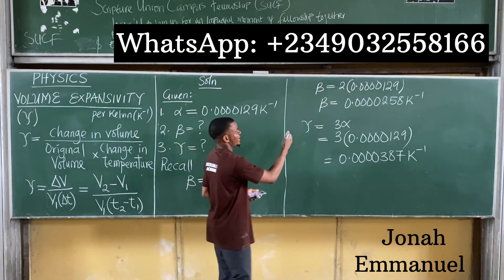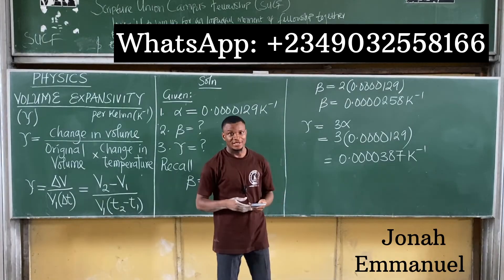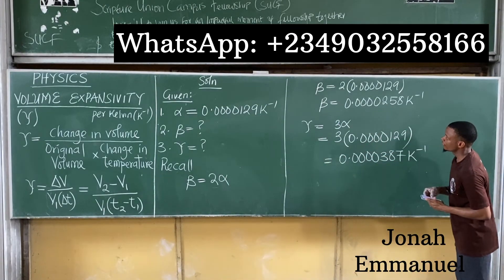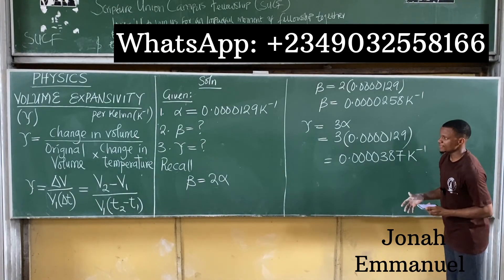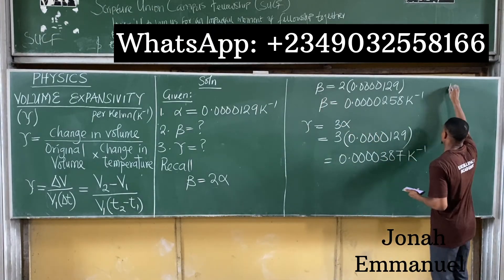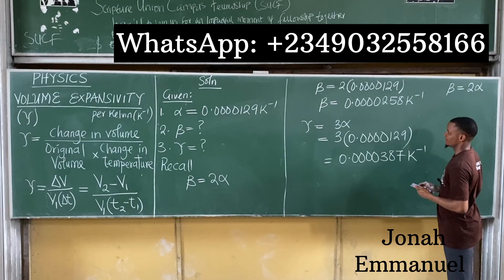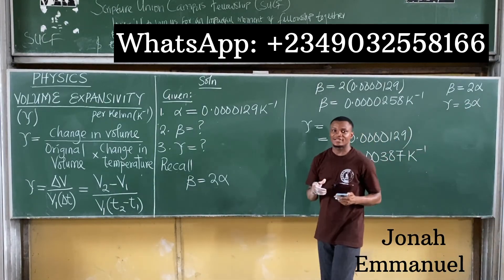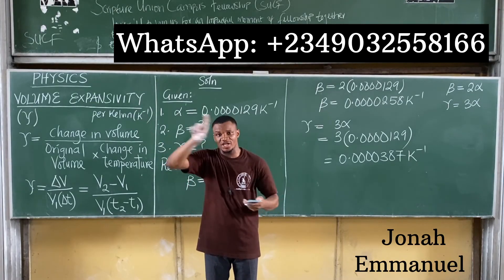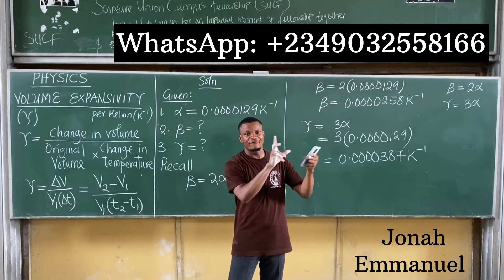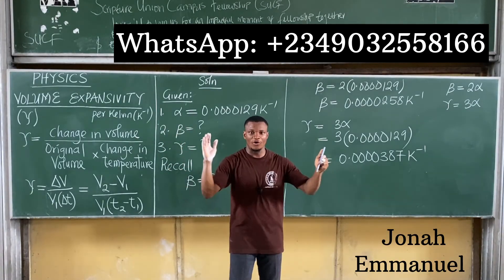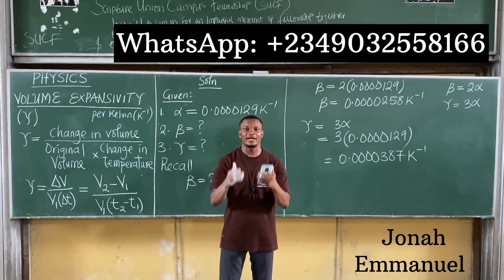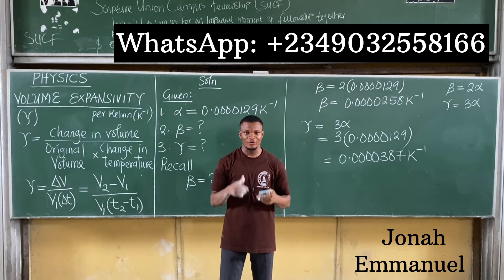Now I have a task for you. We've said that area expansivity β equals 2 times linear expansivity α, and volume expansivity γ equals 3 times linear expansivity α. Your task is: can you derive a single mathematical equation that relates linear, area, and volume expansivity together? Leave your answer in the comment section and I'll reply.